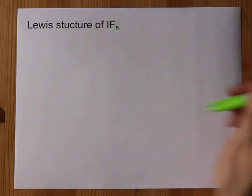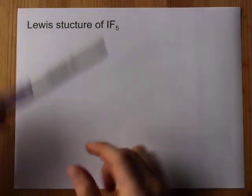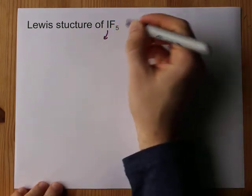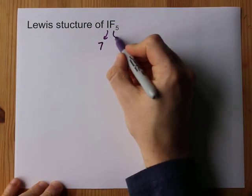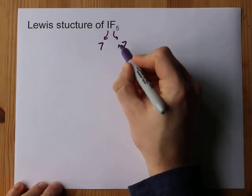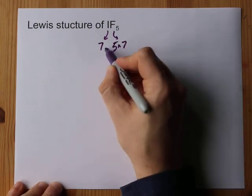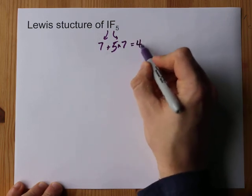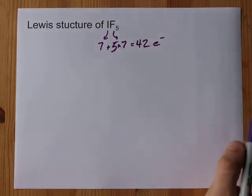You want the Lewis structure for IF5? I got you, fam. Let's count the number of valence electrons. Iodine brings 7, and fluorine also brings 7, but there are 5 of them. So that's 35 to add to our 7. That's 42 valence electrons total.